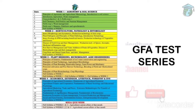Hello everyone, welcome back to our channel Go For Agriculture. The GFA test series is a four-week program covering all BSc Agriculture courses. Week one covers agronomy and soil science, week two covers horticulture, pathology and entomology, week three covers plant breeding, microbiology and agri engineering, and week four covers economics, extension, livestock, forestry and environmental science. Each day we cover each topic, for example day one covers principles of agronomy and agricultural meteorology.